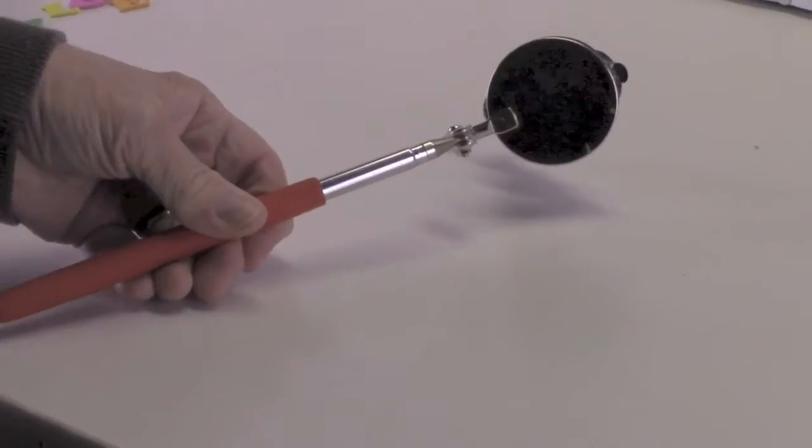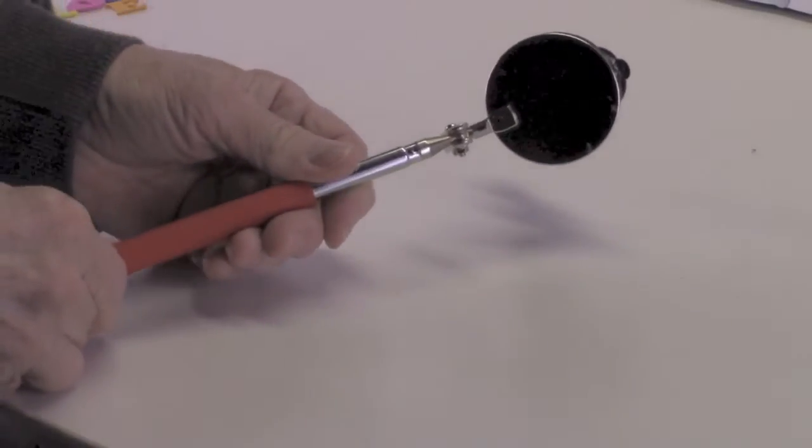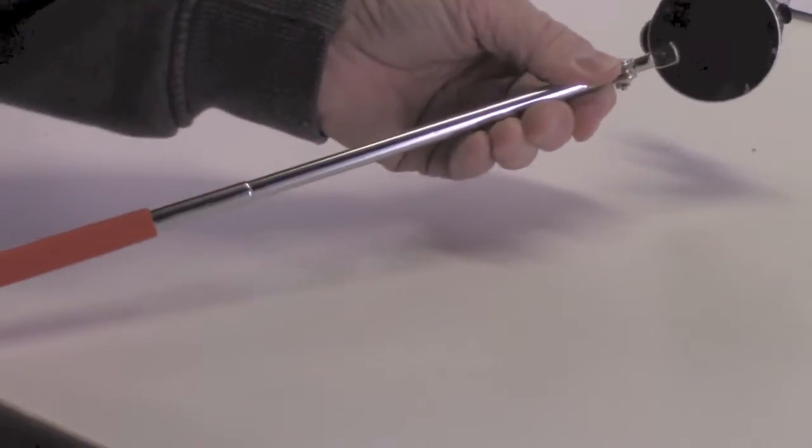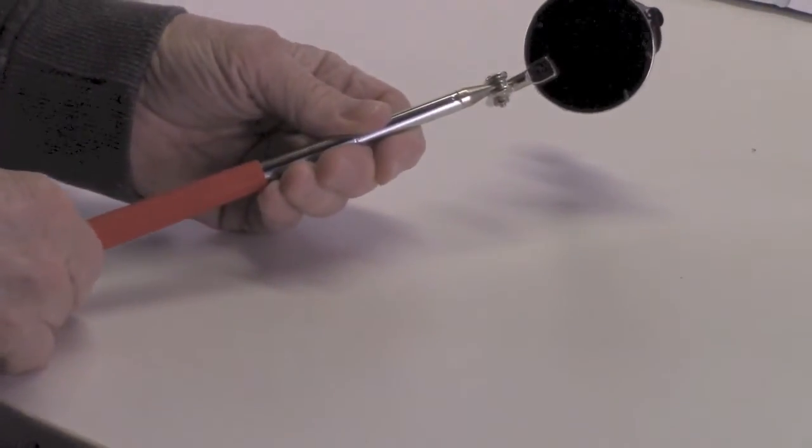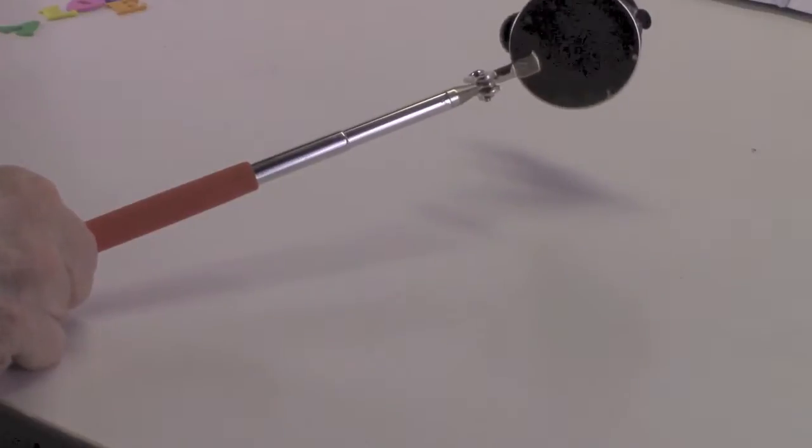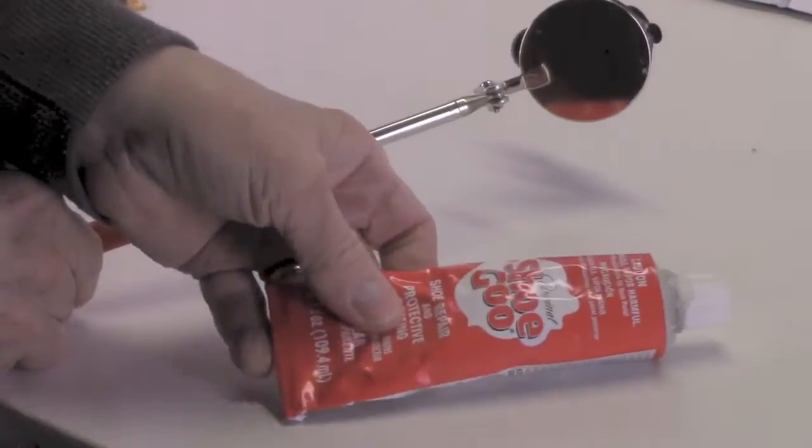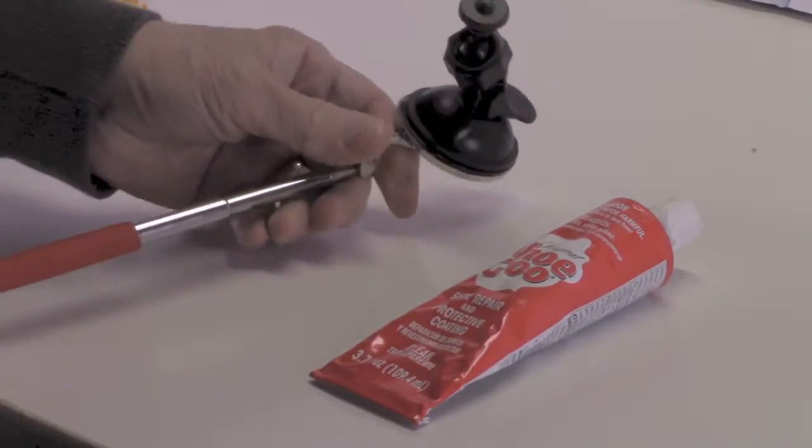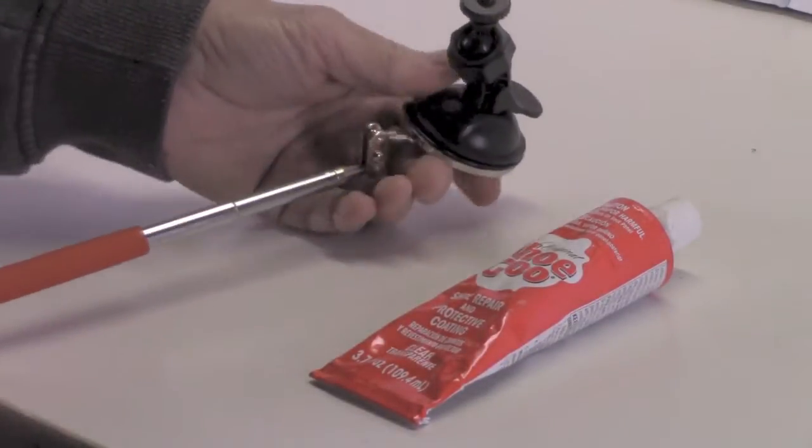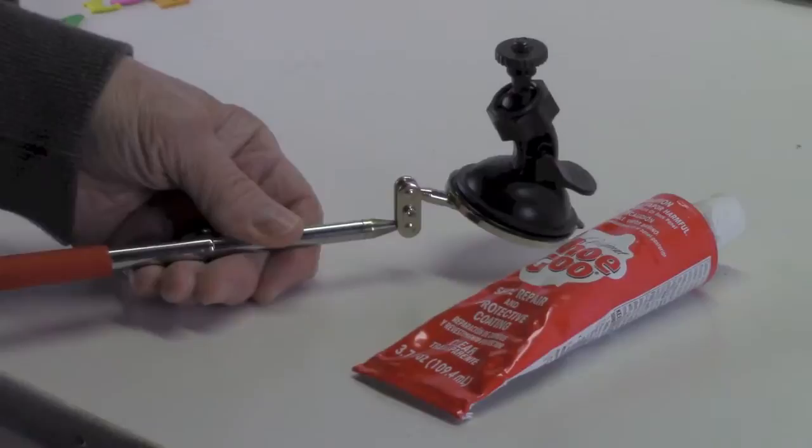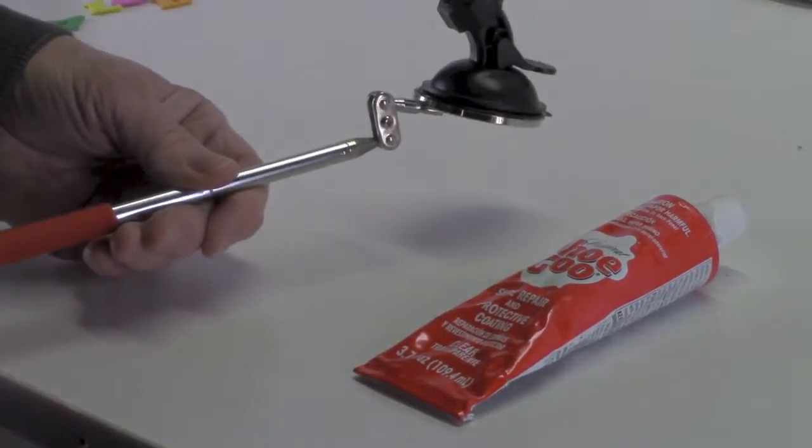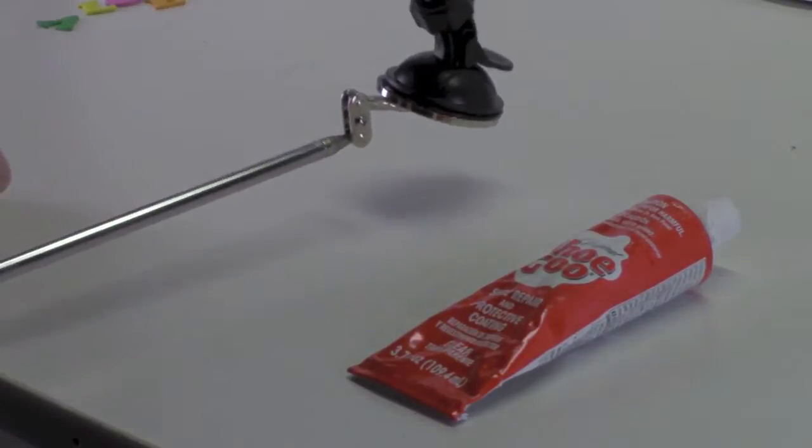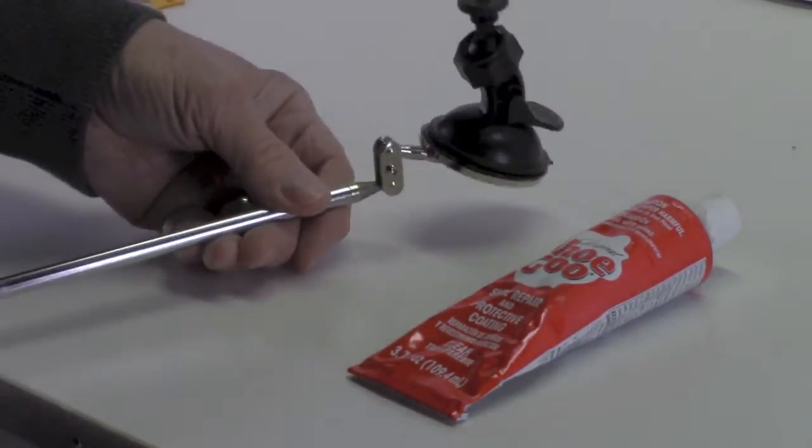This is a telescoping inspection mirror. It telescopes out different sizes and what I did, my favorite type of glue is shoe goo, and I glued one of these windshield mounts onto the mirror. That gives me a telescoping handle for my little action cam that I can walk around with.